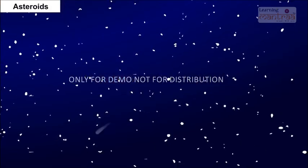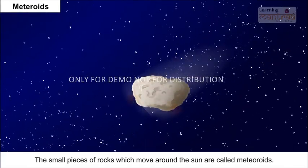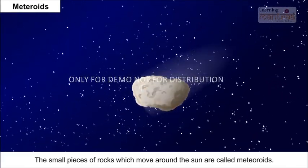Asteroids are found between the orbits of Mars and Jupiter. The small pieces of rock which move around the Sun are called meteoroids.